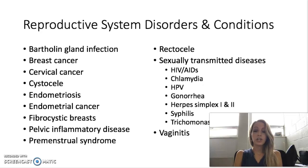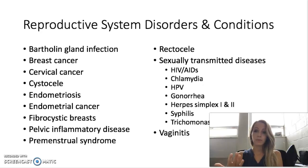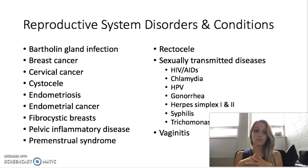Cystocele. This is herniation of the urinary bladder into the vagina. This can occur from injury with vaginal delivery, and it actually causes that bladder to go into the vaginal canal.